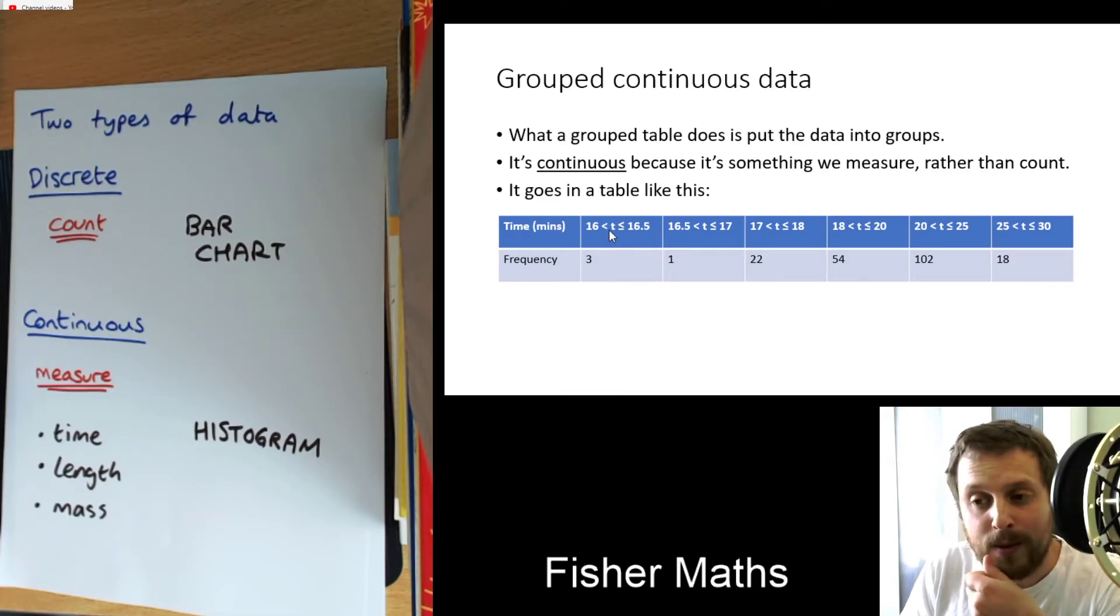If you check, these numbers should add up to 200. So there was three people who got between 16 minutes and 16 and a half minutes. There was one person who got between 16 and a half minutes and 17 minutes. There were 22 people who got between 17 and 18 minutes. 54 who got between 18 and 20 minutes. 102 who got between 20 and 25 minutes. And 18 who got between 25 and 30 minutes.